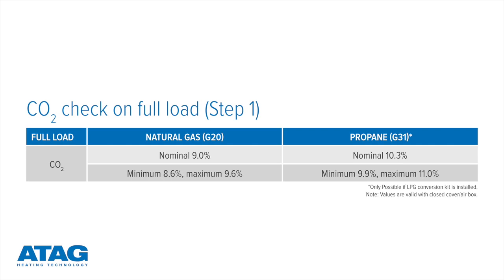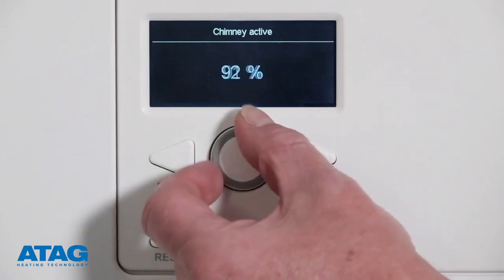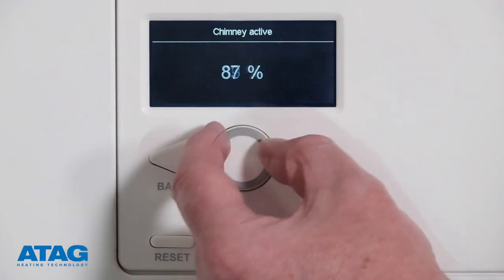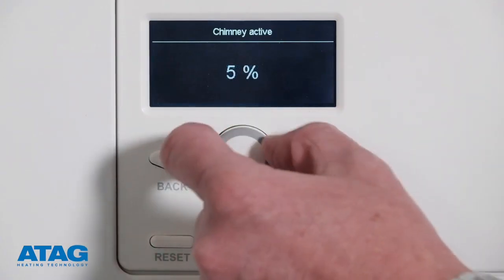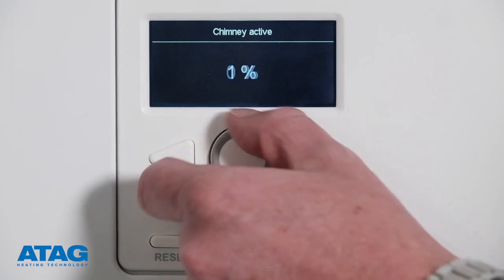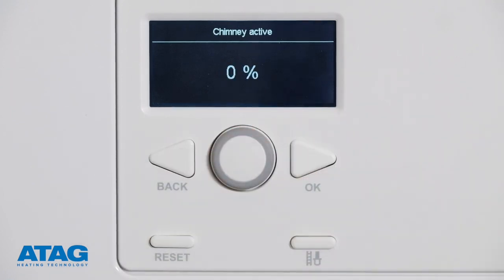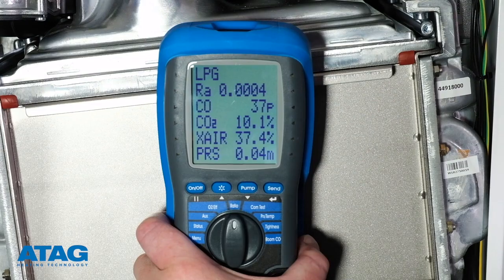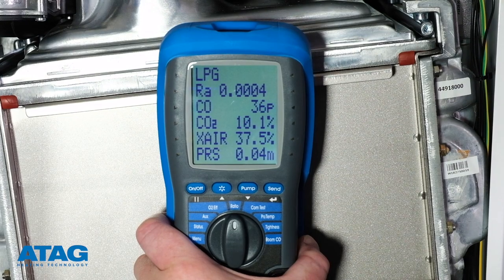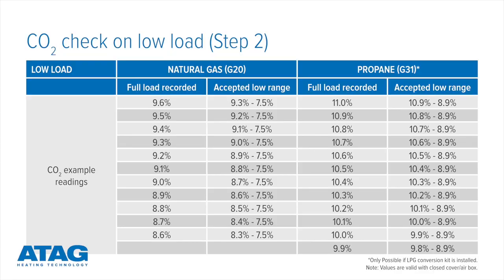Check if the CO2 value corresponds with the full load table as shown. Then check the CO2 values at low load: turn the selector wheel and move the percentage down to zero percent and press OK. Check whether the CO2 value corresponds with the low load table shown.